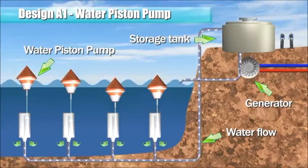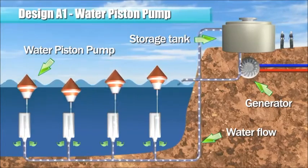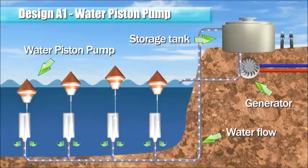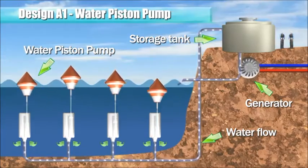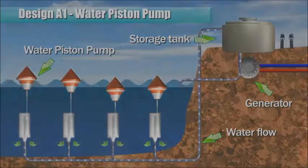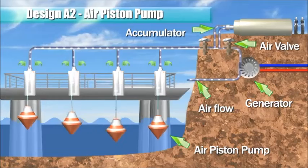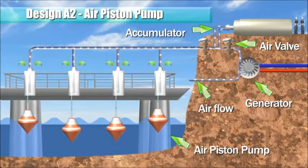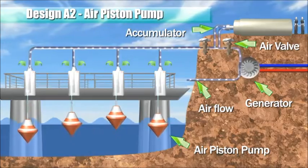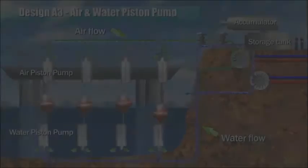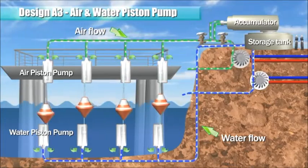In this example, a submerged pump is operated to pump water to an elevated storage tank. Water from the storage tank is channeled to rotate a fluid motor or turbine, which in turn rotates a generator to produce electricity. An air piston pump is disposed above the water level. The accumulator and flow control valve help to maintain a more constant airflow to drive a turbine and generator. This design is integrated to operate both air and water piston pumps.